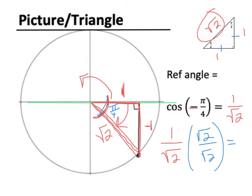So 1 times root 2 is root 2. And root 2 times root 2, I'm going to do that down here. Root 2 times root 2 is 4. And the square root of 4 is 2. So your final answer is root 2 over 2. Now luckily,